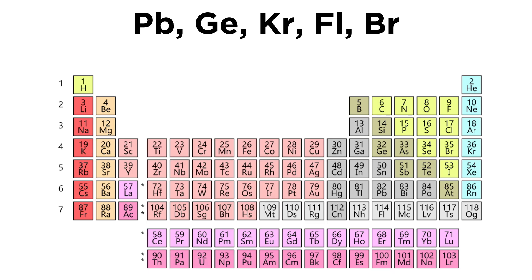First, let's do the atomic radius trend, and we need to find these five elements on the periodic table. We've got lead, we've got germanium, we've got krypton, we've got flerovium, and we've got bromine. So those are the five elements that we are looking at.